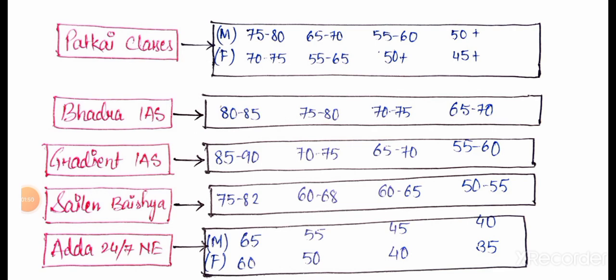Adda 24/7 Northeast has said 65 for general male. So there are so many factors to decide cutoff, for example the number of posts, how many candidates have applied, plus easier factor, negative marking, how many appeared.